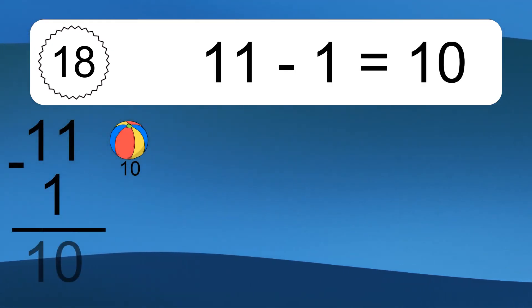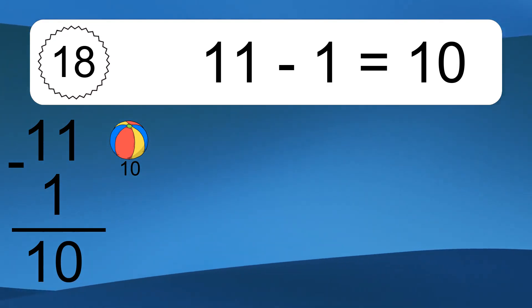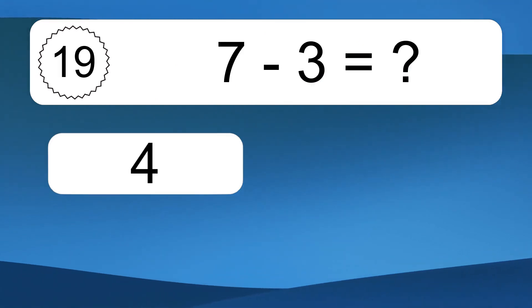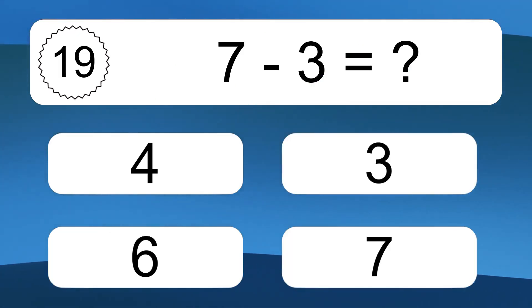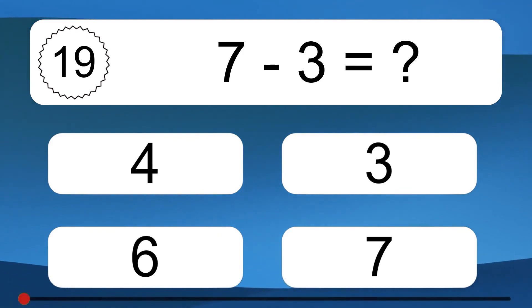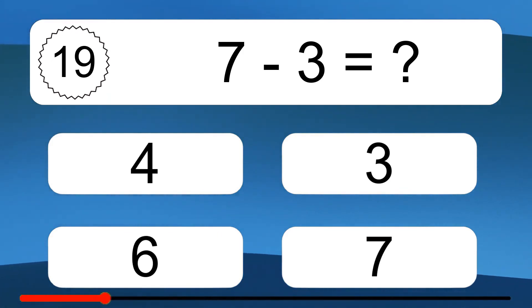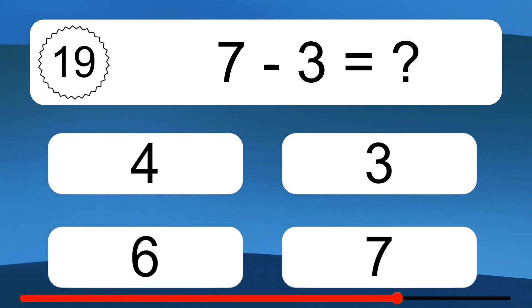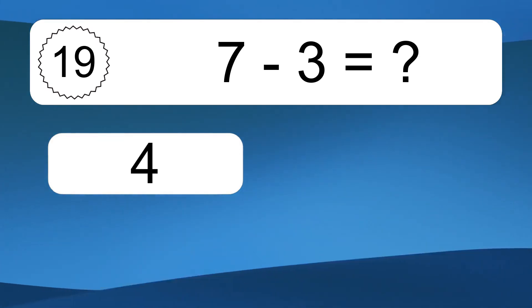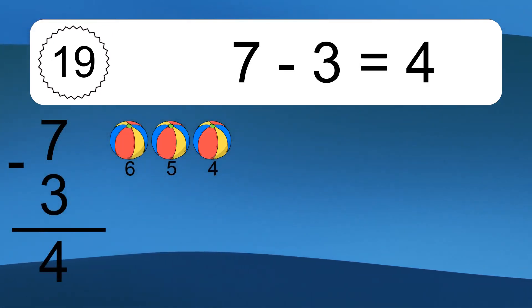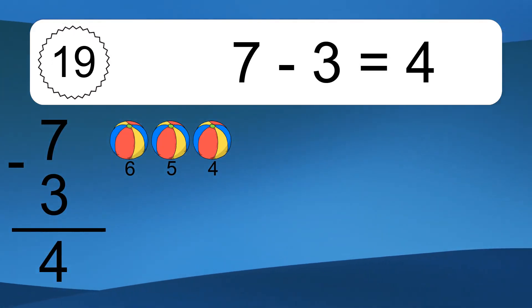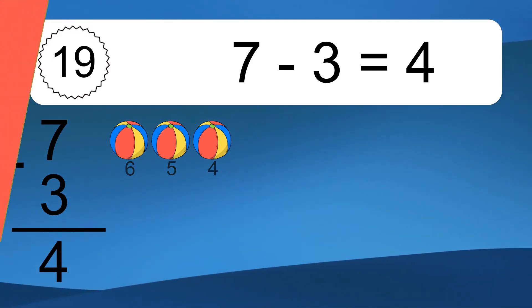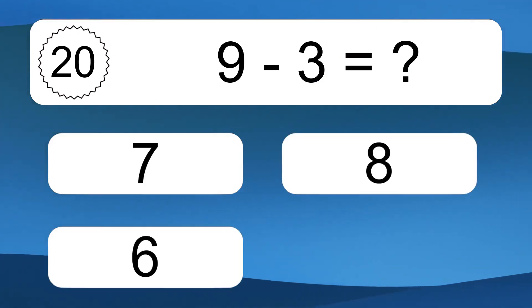11 minus 1 equals what? 11 minus 1 equals 10. Let's count it. 10. 7 minus 3 equals what? 7 minus 3 equals 4. Let's count it. 6, 5, 4.